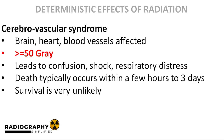Cerebrovascular syndrome occurs at exposure to 50 gray of radiation. Exposure of this magnitude damages the blood vessels, causing fluid to leak into the brain. The increased intracranial pressure leads to confusion, loss of vision, shock, respiratory distress, and many other symptoms. Death typically occurs within a few hours to 3 days.